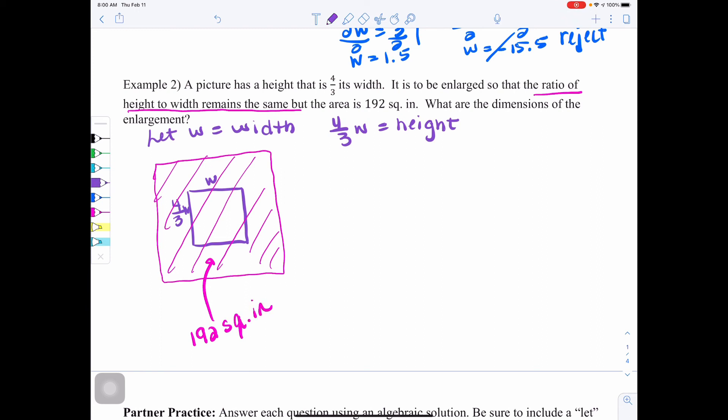But our new area of this whole thing is 192 square inches. So we're looking at a rectangular shape again. So we have A equals length times width, area's length times width. Our area is 192. Our length, which would be kind of the same thing as our width, because we're using width twice here, is going to be 4 thirds. We'll have that be our height, W. And then our other dimension is the width, which is W.